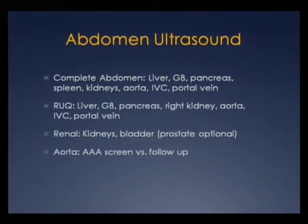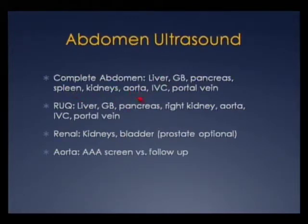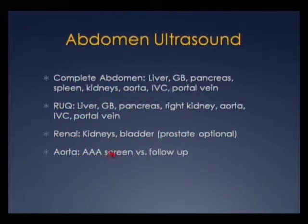There are different components of the abdominal ultrasound with corresponding different CPT codes. The complete abdomen includes the liver, spleen, both kidneys, aorta, IVC, and portal vein. The right upper quadrant does not include the spleen or left kidney. The renal exam includes the kidneys, bladder, and sometimes the prostate. For the aorta, there's a different CPT code for screening versus follow-up.